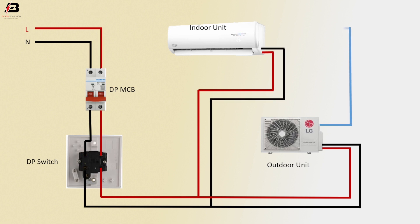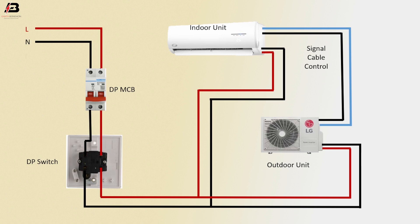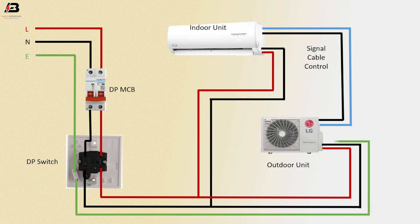Signal and control cable connection between outdoor unit and indoor unit. Earth connection connected to double pull switch. Earth connection from double pull switch to connect outdoor unit and then connect to indoor unit.